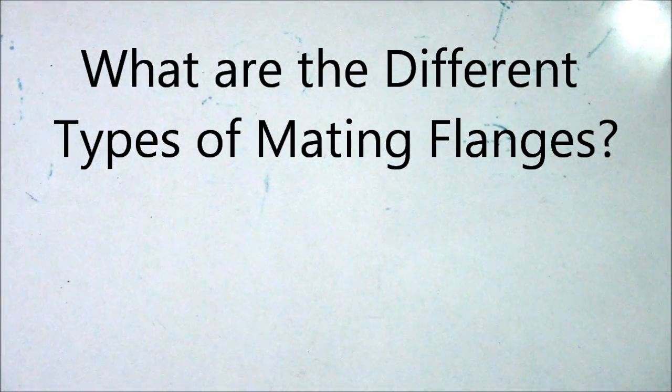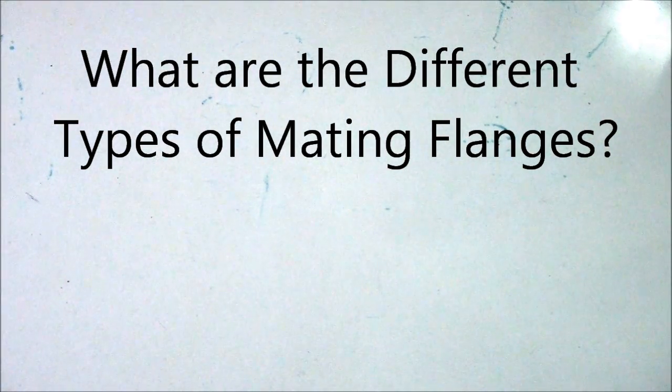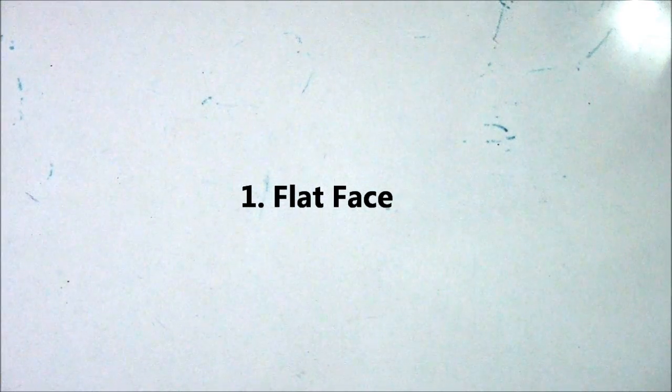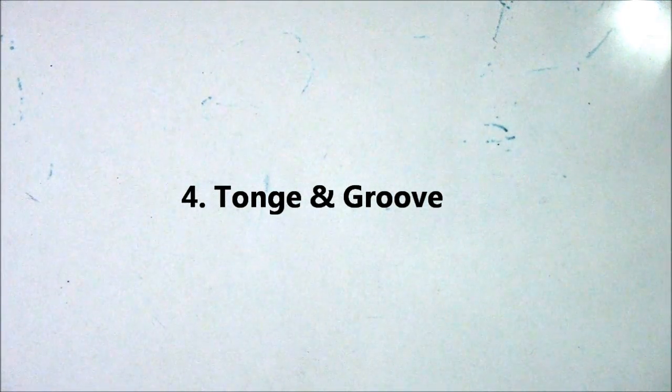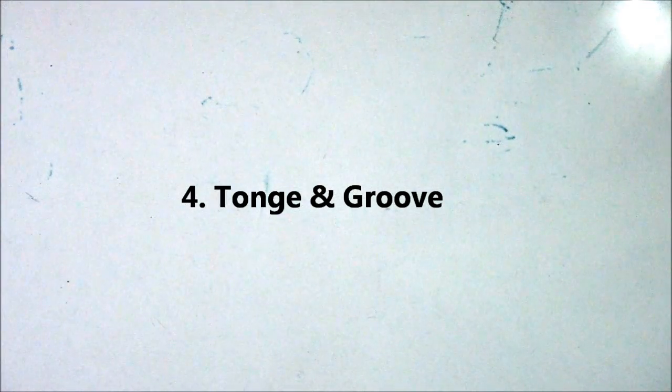The next question is: what are the different types of mating flanges? Number one, flat face; number two, raised face; number three, RTJ (ring type joint); number four, tongue and groove; and number five, male and female. These are the different types of mating flanges.